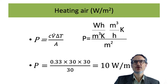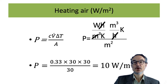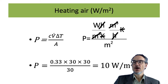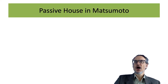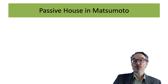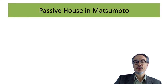The heat capacity of air is 0.33 watt hours per cubic meter per kelvin. So the maximum heating load works out using the equation: power equals C times the volume flow rate times the temperature difference divided by the area — giving 10 watts per square meter. Checking the units confirms watts per square meter, and over the year this comes to 15 kilowatt hours per square meter.